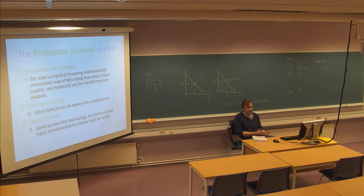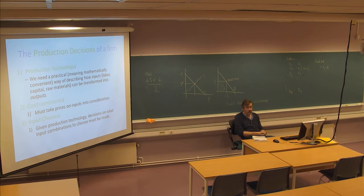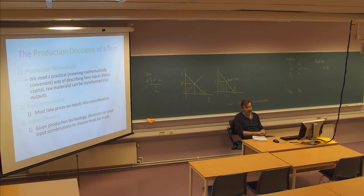Of course there are cost constraints — inputs cost money, and we need to take that into consideration. We can't spend too much without relating it to revenues. And there are input choices: given the production technology, decisions on what input combinations to choose must be made — how many people to hire, what kind of people, what machines to buy, and what salary to give.